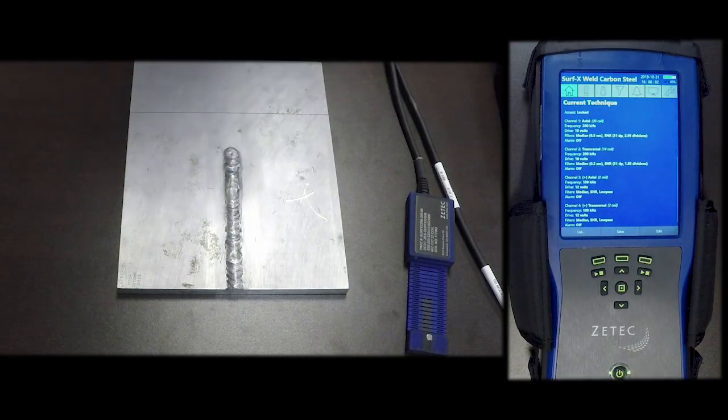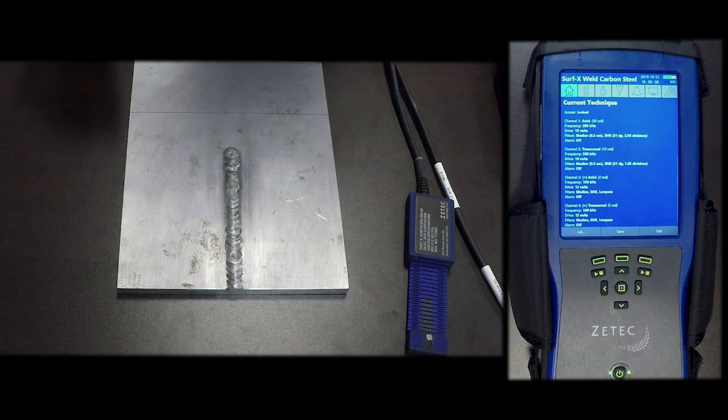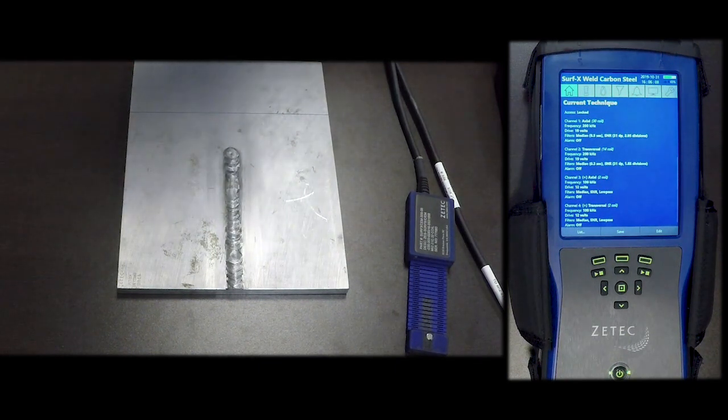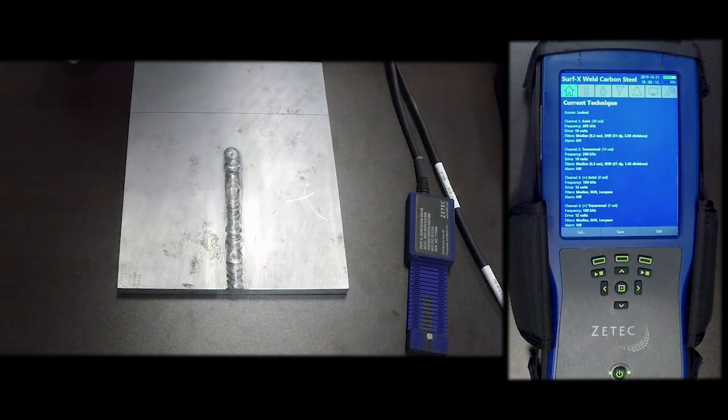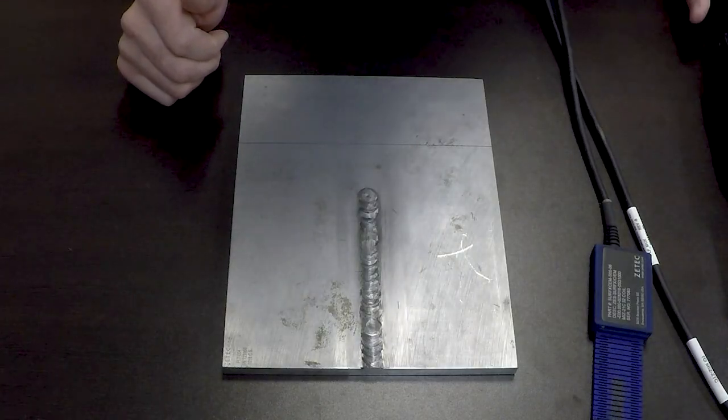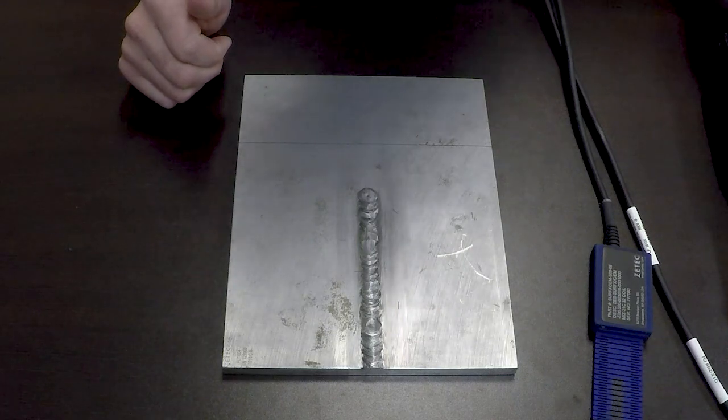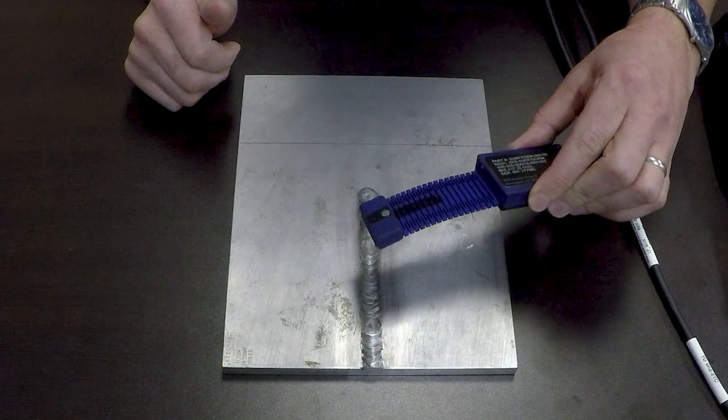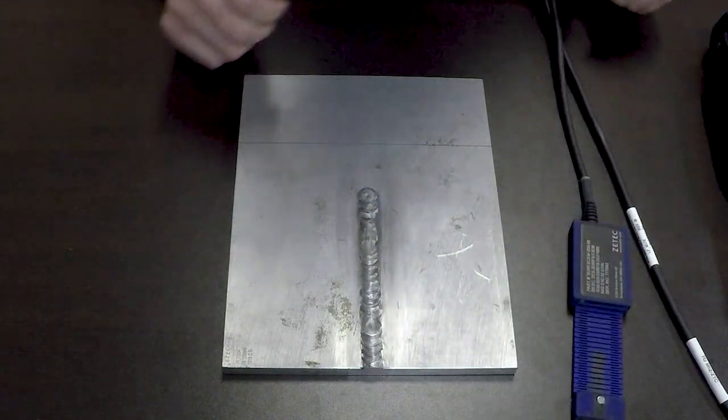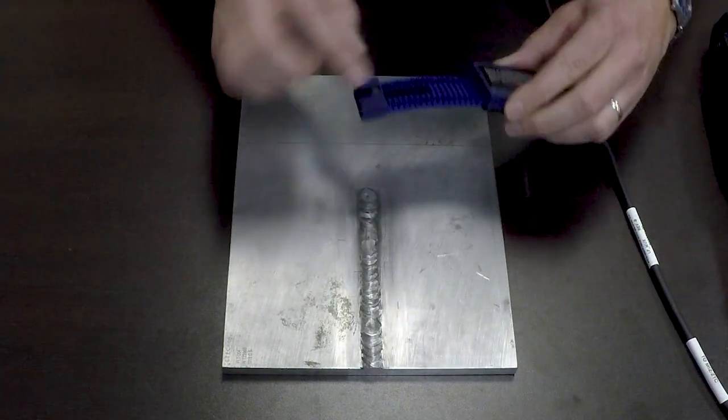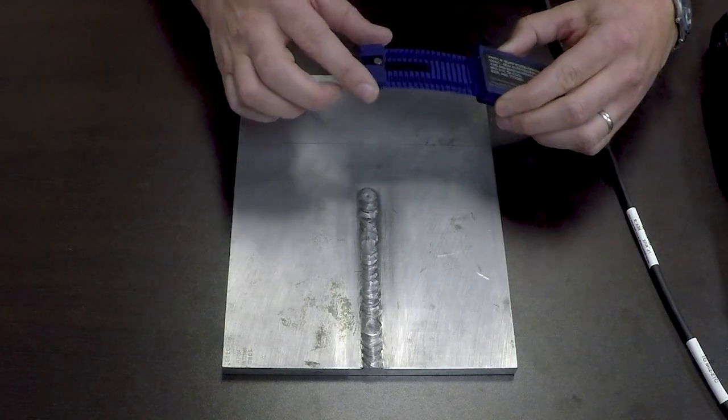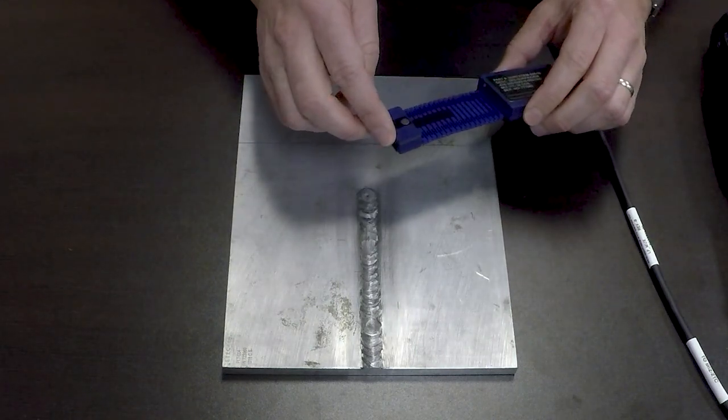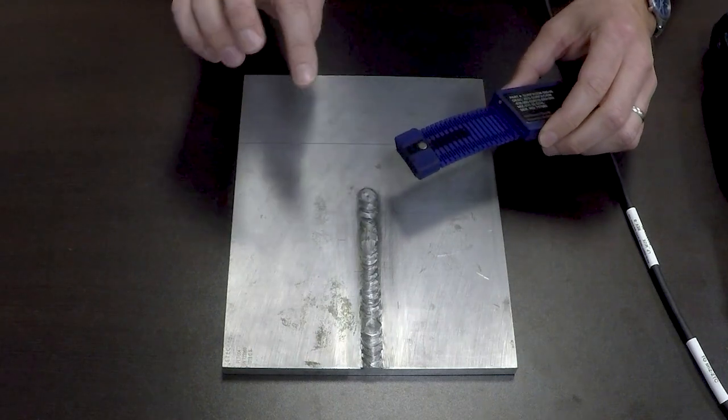Typically these inspections are done using PT or MT and also conventional single coil eddy current probes. This particular solution is using the MIS-21C, the array version, and a SURF-X weld probe. This probe has 32 coils for the array portion and then it has two plus point coils at the end that are in different orientations to be able to get into the toe of the weld.